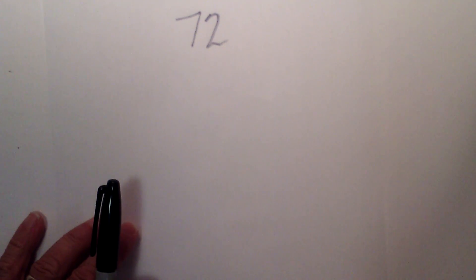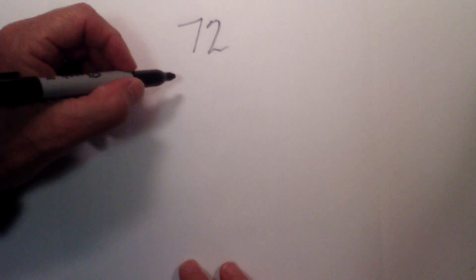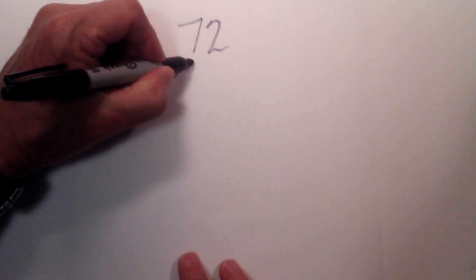In this lesson, we will find the prime factorization of 72. Prime factorization is finding the prime numbers that when multiplied together equal the original number. Let's get started with 72.